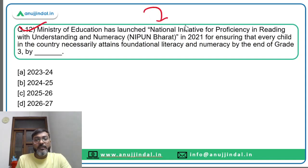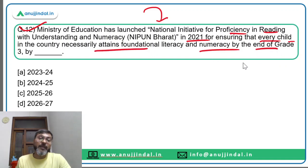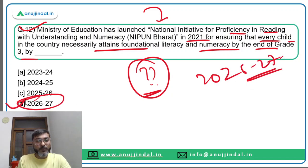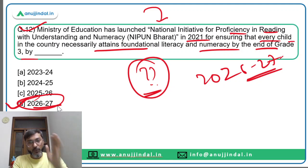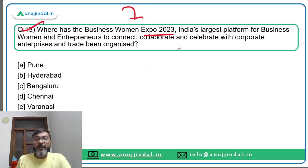Question twelve: the Ministry of Education launched the National Initiative for Proficiency in Reading with Understanding and Numeracy (NIPUN Bharat) in 2021 to ensure every child attains foundational literacy and numeracy by the end of Grade 3. The target under this scheme will be achieved by financial year 2026-27. The correct answer is option B.